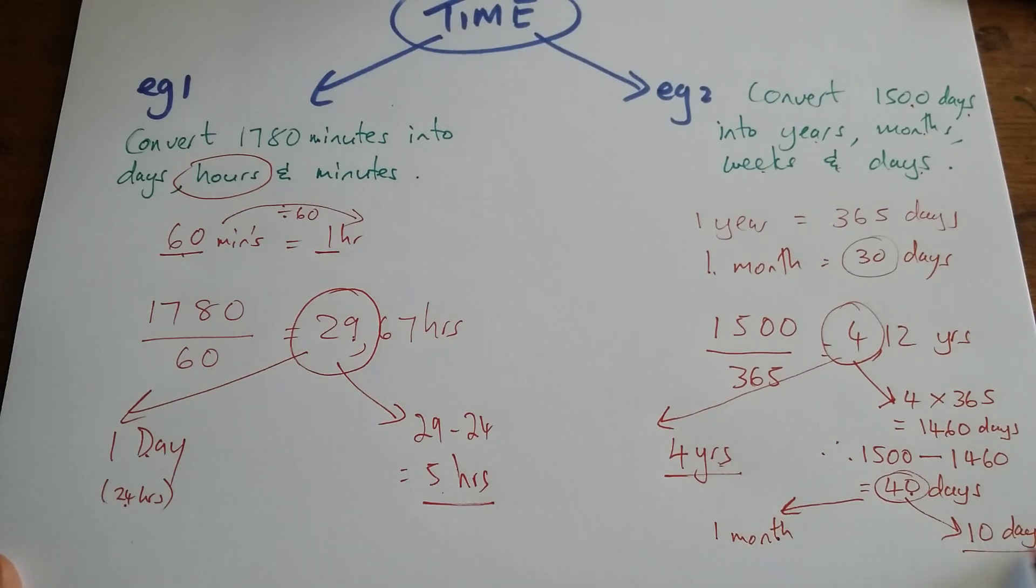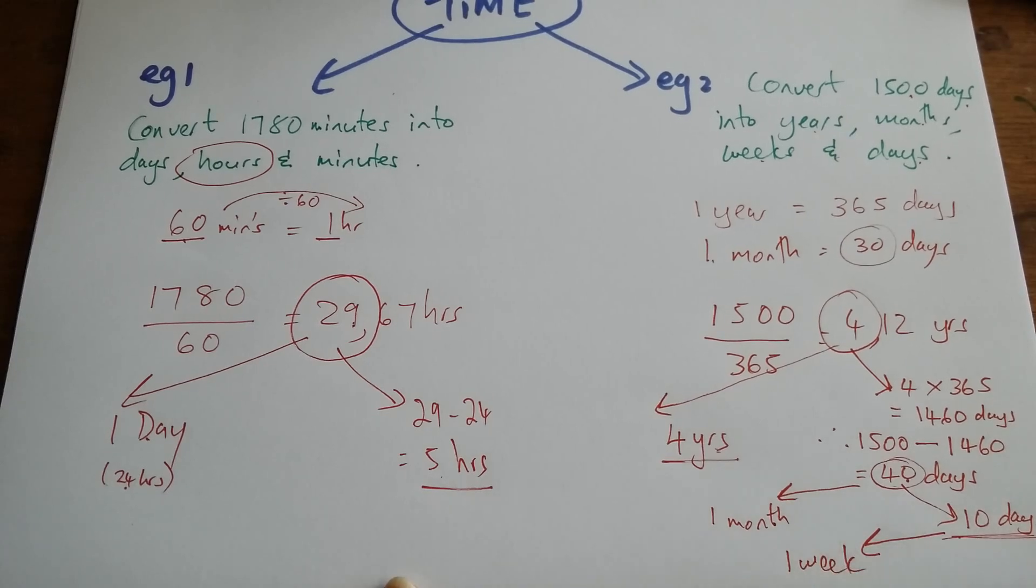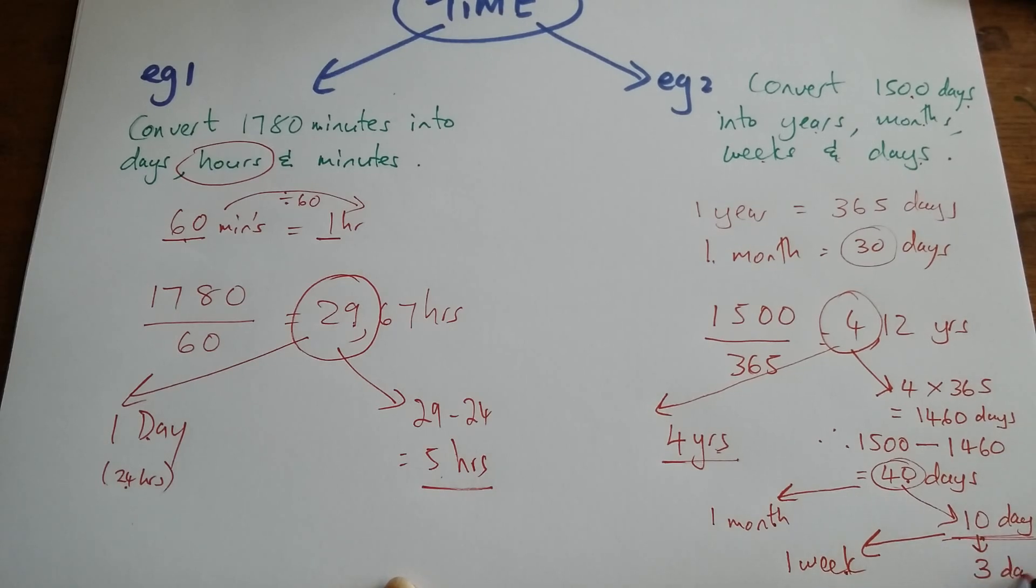Now, from my 10 days, I need to remove a week. So a week will take away 7 days. So from 10 days, if I remove a week, that's 10 minus 7, my balance is going to be 3 days.